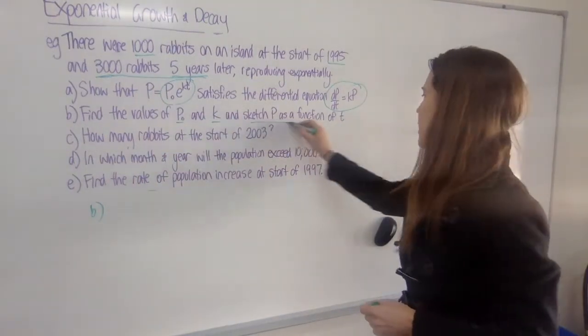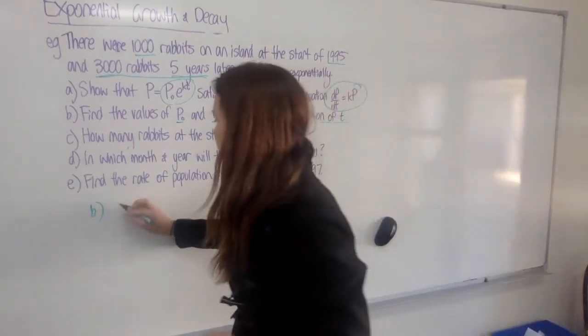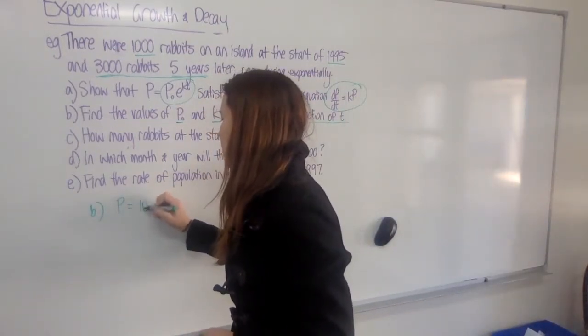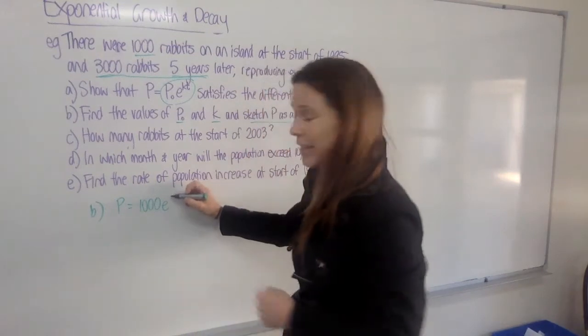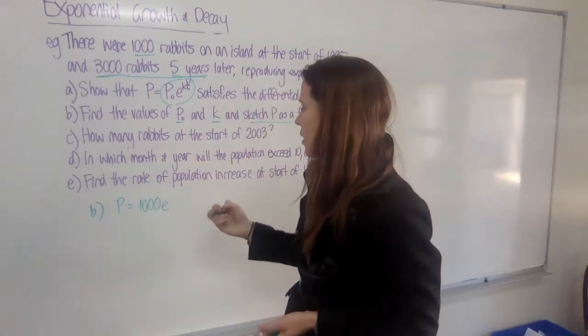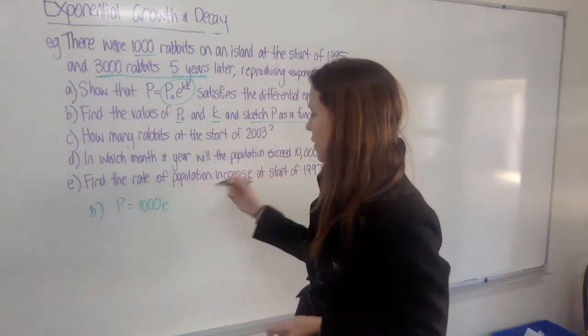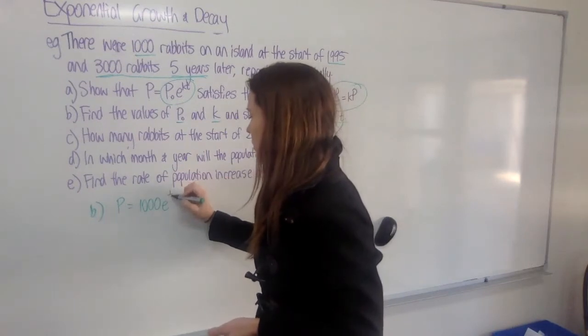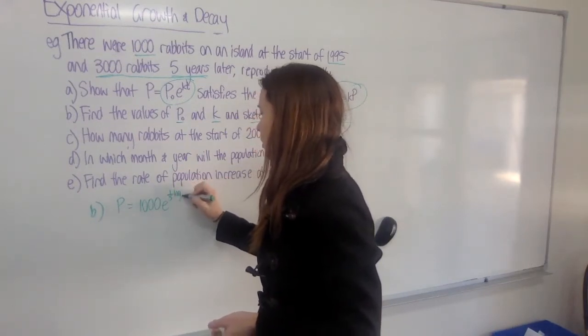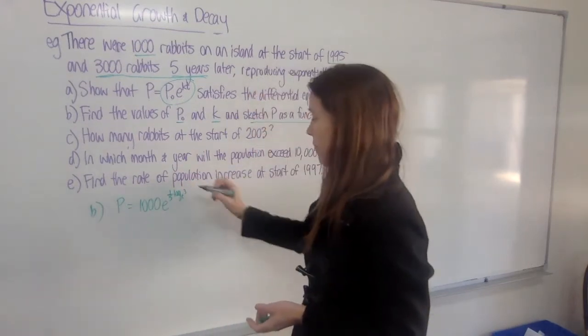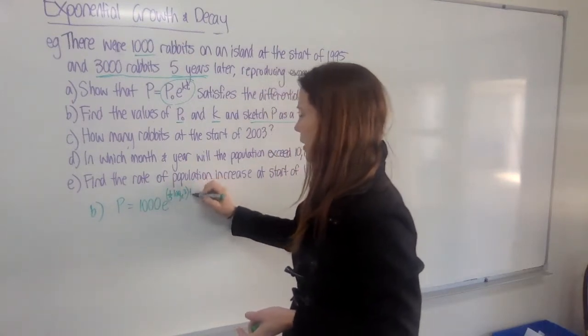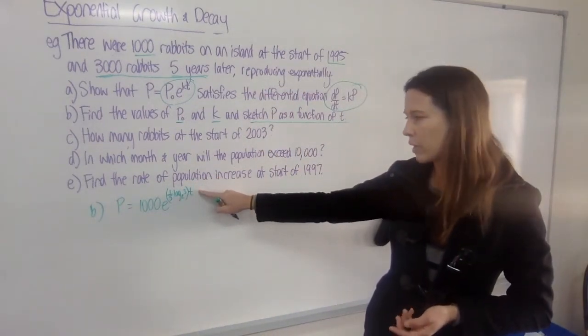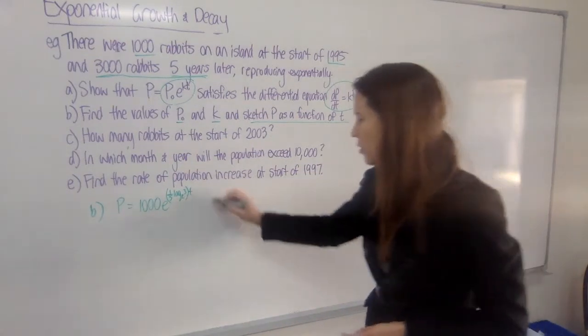But I still need to sketch P as a function of t. So let's look at the formula for P. We've got 1000e^(kt). But we know what k is now. So now we can actually write it as a function. k was one-fifth ln(3) multiplied by t. So that's now the formula that we're working with. Now what's this going to look like?